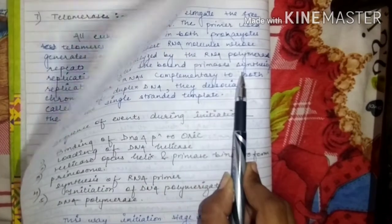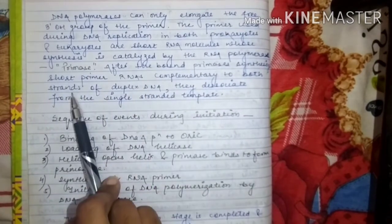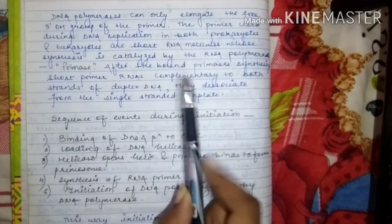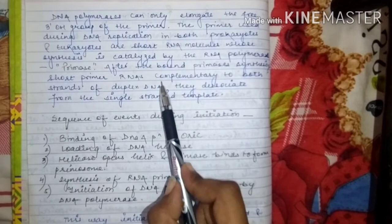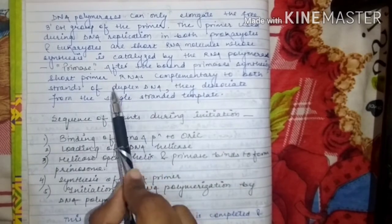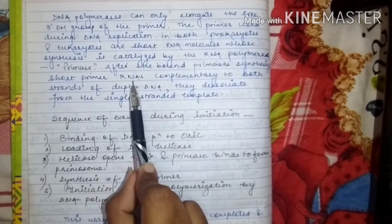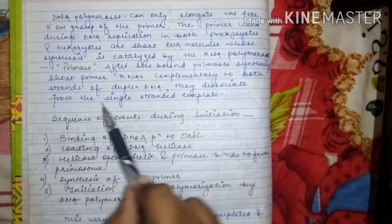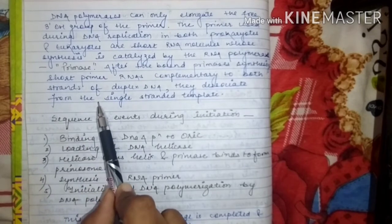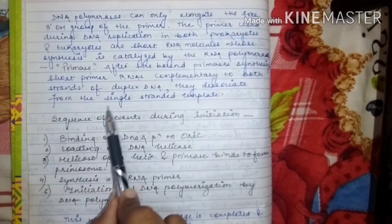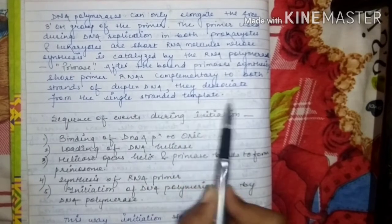After the bound primase synthesizes short primer RNAs complementary to both strands of the duplex DNA — synthesized within the DNA, complementary to the template — primase dissociates from the single-stranded template. So primase synthesizes the primer and then leaves the single-stranded template.